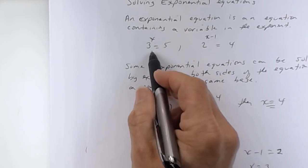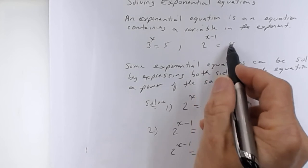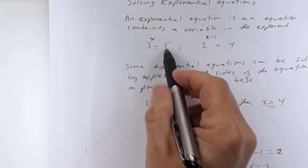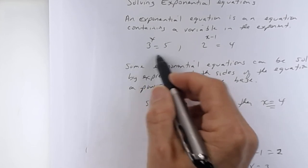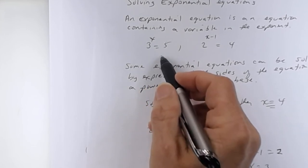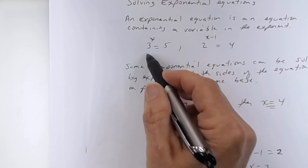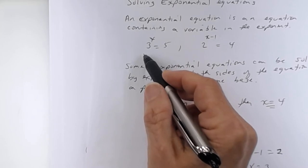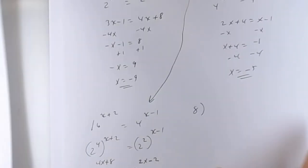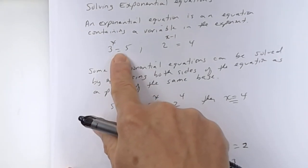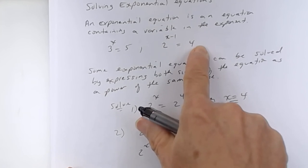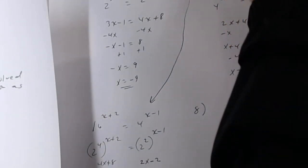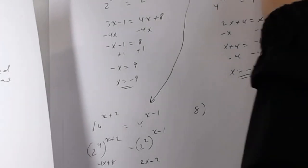Earlier I showed that 3 to the x equals 5 is harder to solve. You can't get the base to be the same — 3 and 5 don't share a common base. So you have to solve that type using logarithms. We're going to learn how to do that, but there are a couple of other things we need to cover before we get to logarithms.